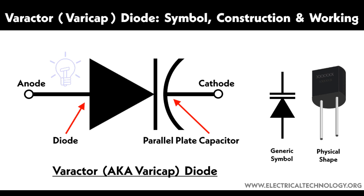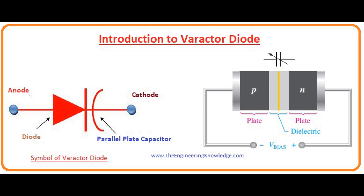Summary: The varactor diode's function as a variable capacitor, dependent on the reverse-bias voltage, makes it an essential component in a wide range of electronic applications, particularly those involving tuning and frequency control.